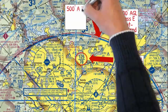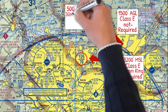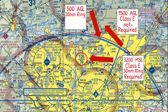How about if you're right here at 500 feet AGL, inside the 30 nautical mile ring but outside of Class B airspace? Which airspace are you in? Correct — Class G. Is ADS-B required? Yes, again, because of the 30 nautical mile ring.